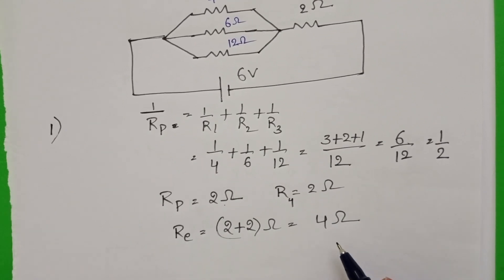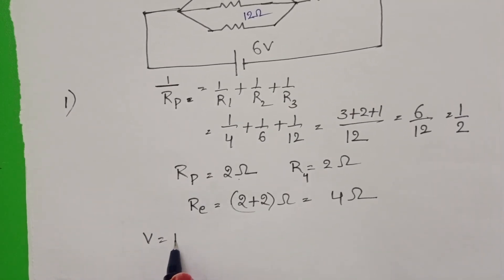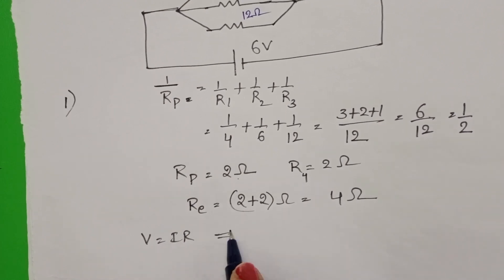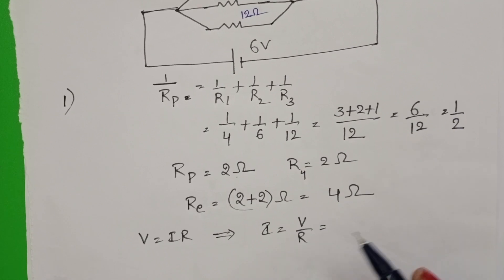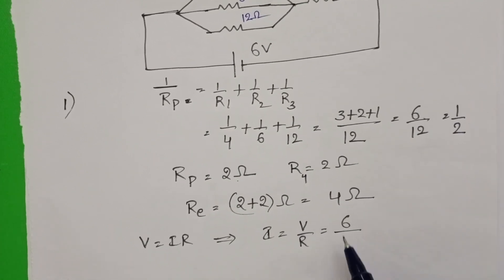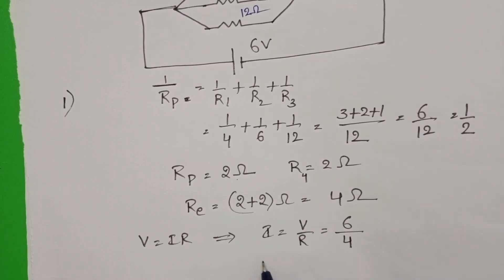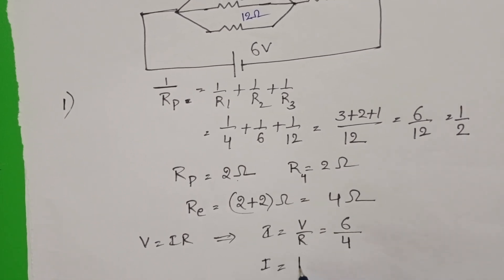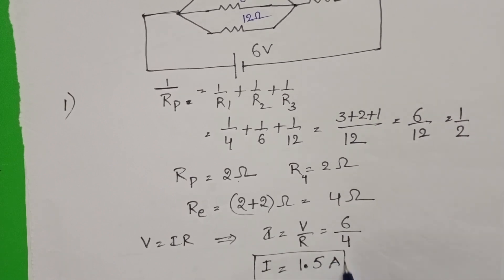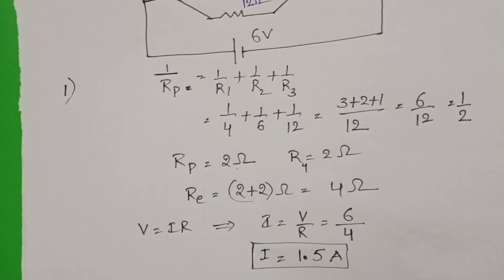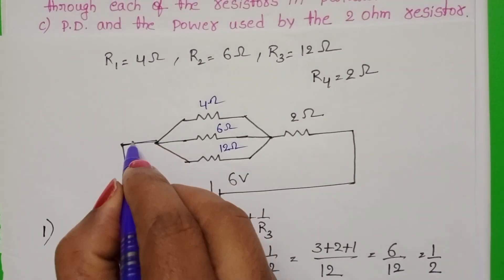Now we know the equivalent resistance of the circuit is 4 ohm. Applying Ohm's law: V equals IR, so the main current I equals V by R. The given potential difference is 6 volt and equivalent resistance is 4 ohm. Therefore, current equals 1.5 amperes. This is the answer for the first question — the main current in the circuit is 1.5 ampere.